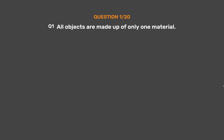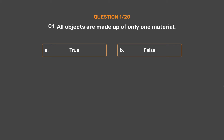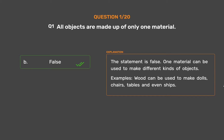Question number 1. All objects are made up of only one material. Option A: True. Option B: False. The correct answer is Option B, False. The statement is false. One material can be used to make different kinds of objects. For example, wood can be used to make dolls, chairs, tables, and even ships.